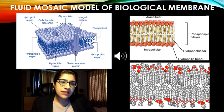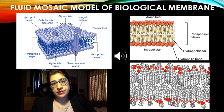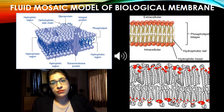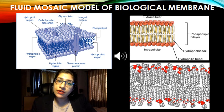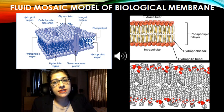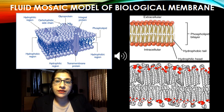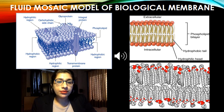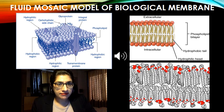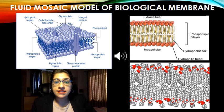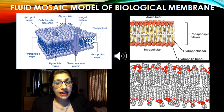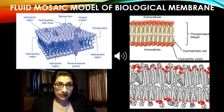Cholesterol is a major component of most mammalian biological membranes. It complexes with the phospholipids and reduces the permeability of the phospholipid membrane to water, glucose, cations, etc. Its removal causes the membrane to lose its structural integrity and to become highly permeable.